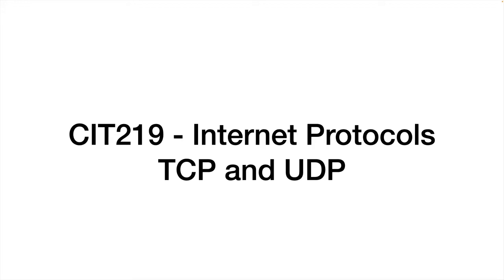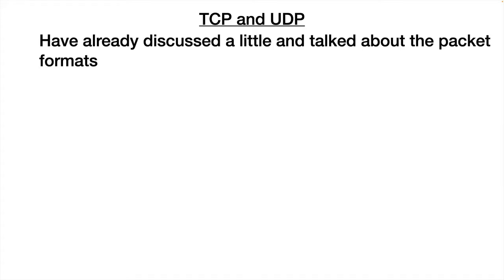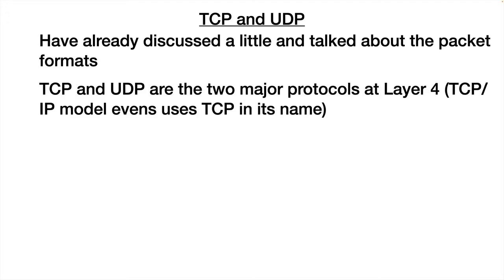In this lecture, I'm going to go back and talk a little bit more about TCP and UDP protocols. We've already talked about this a little, and we've already talked about the packet formats for both a TCP packet and a UDP packet in a previous lecture. It's important to remember that TCP and UDP are the two major protocols at layer four of the OSI model.